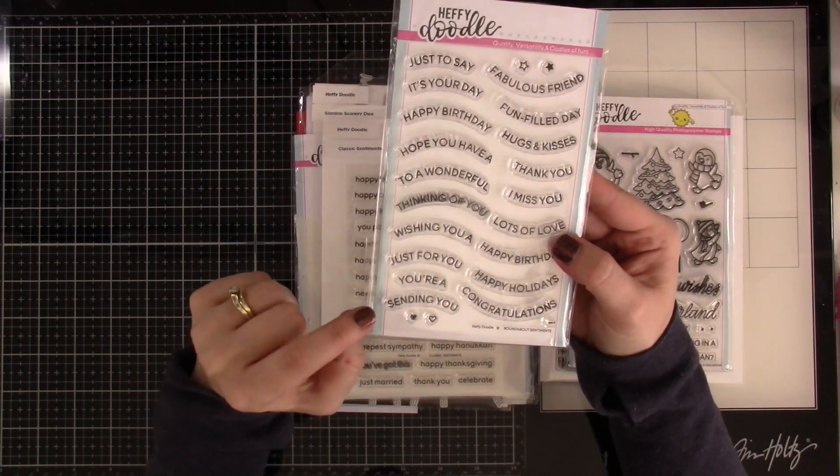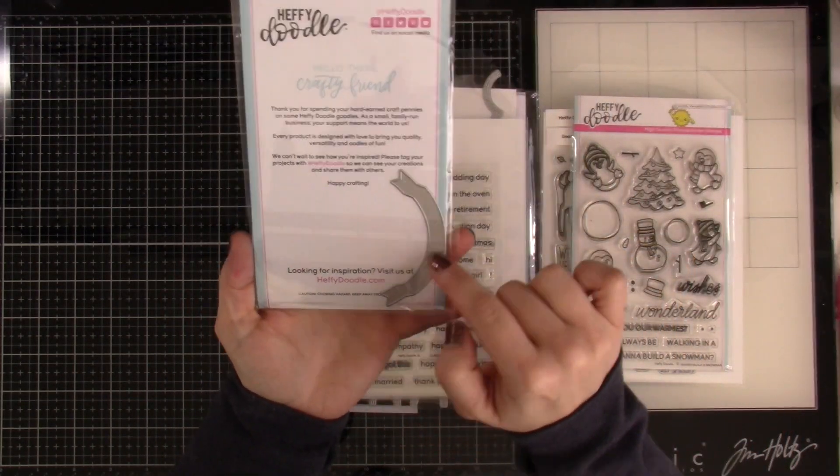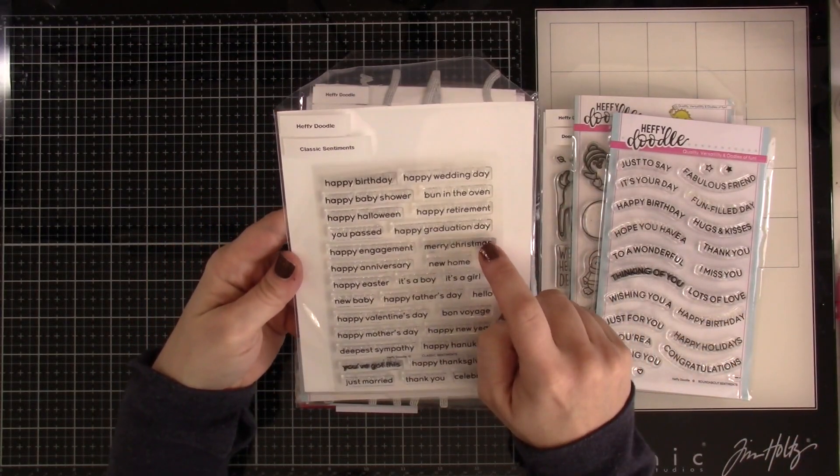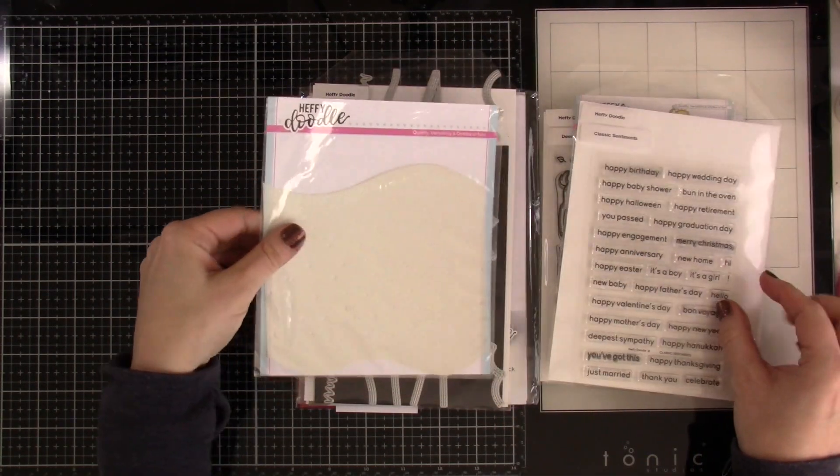We're going to be pulling in this Roundabout Sentiment with a matching die. I also needed the Classic Sentiments because I need Merry Christmas, which that's why it's perfect.